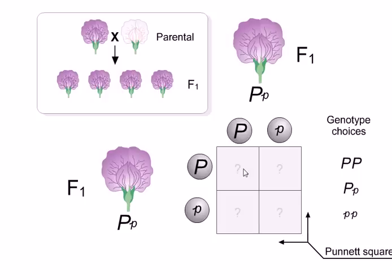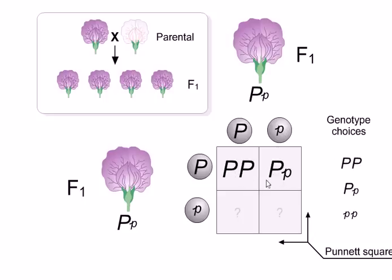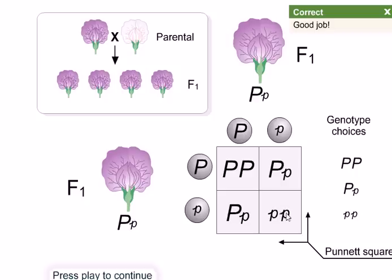Now, what will be the genotype? These alleles are coming from the father and from the mother. In the Punnett square, we multiply all combinations. Caps P with caps P gives PP; caps P with small p gives Pp; again caps P with small p gives Pp; and small p with small p gives pp.